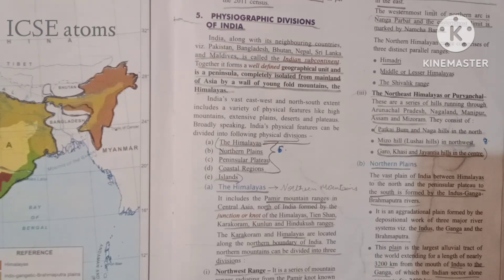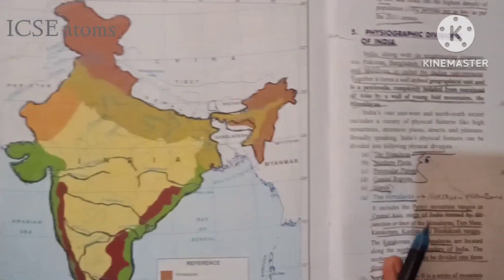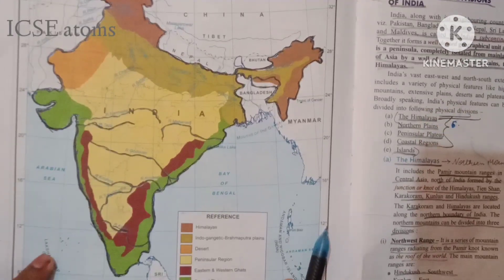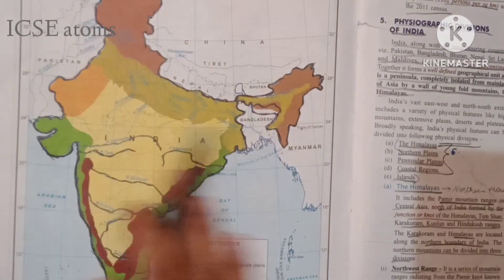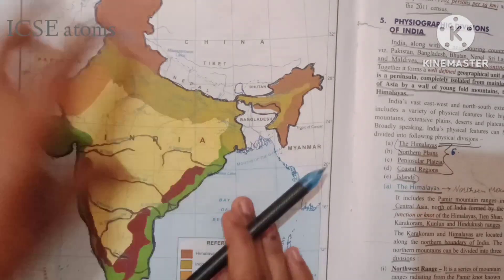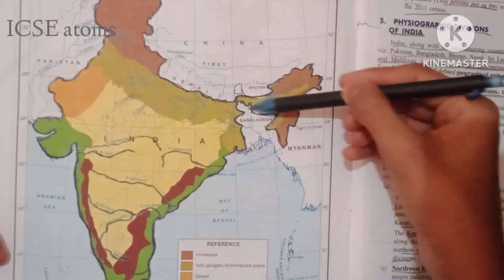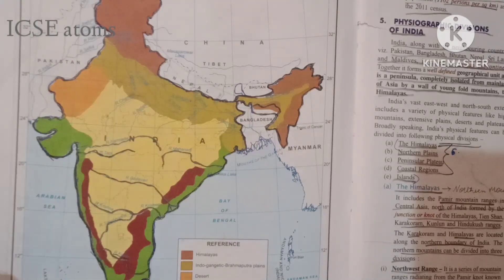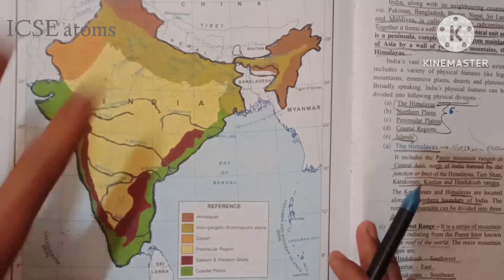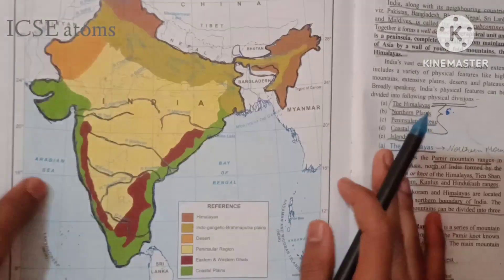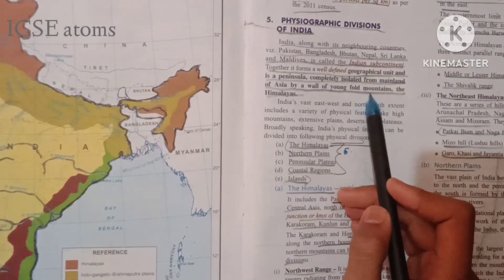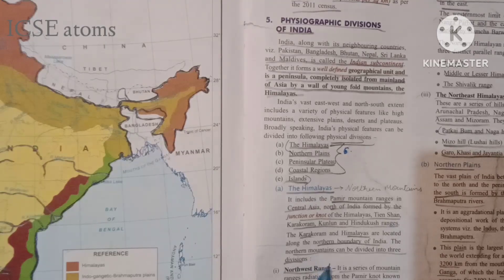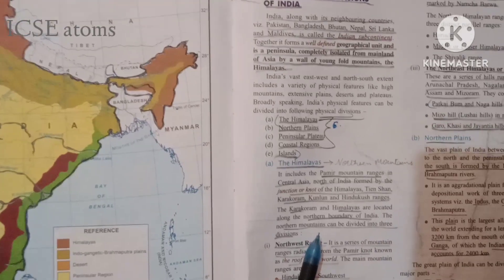Now we look at the physiographic divisions of India. India, along with its neighboring countries — China, Pakistan, Bangladesh, and Sri Lanka — is known as the Indian subcontinent. The Himalayas separate India from China, mountain ranges separate it from Pakistan, and water bodies separate it from Sri Lanka. In this way, India is isolated from the rest of Asia by the young fold mountains of the Himalayas, which act like a wall of Asia.